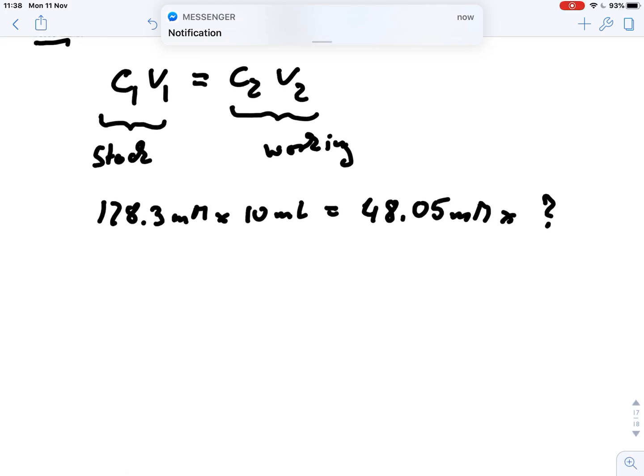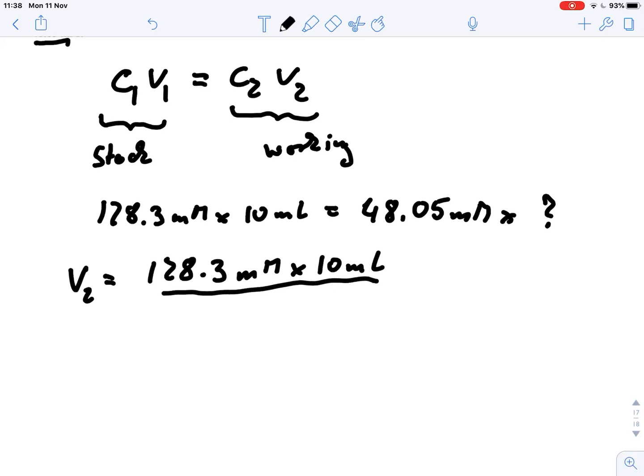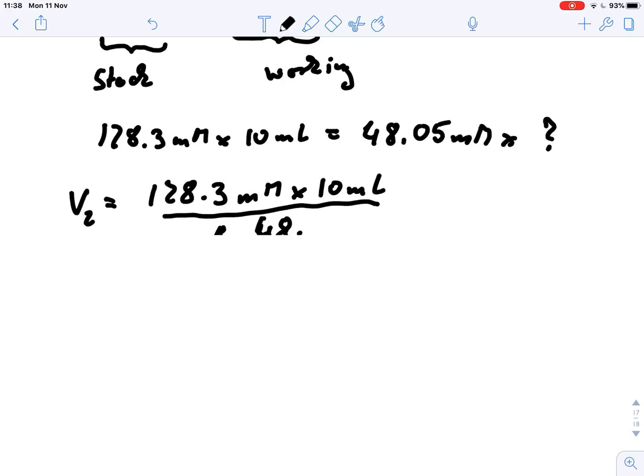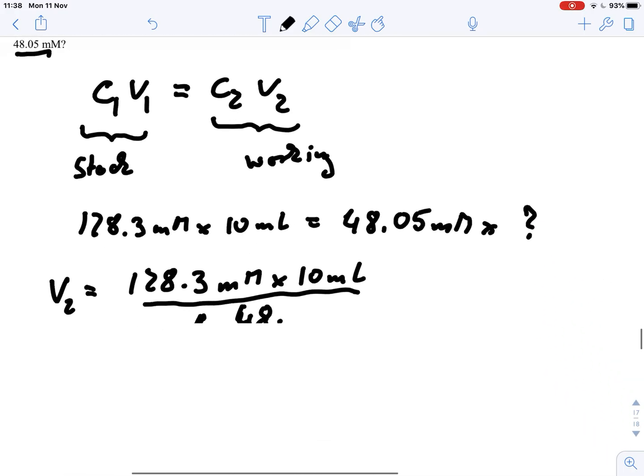So we just rearrange this equation and we get V2 equals 128.3 millimolar times 10 milliliter divided by 48.05 millimolar, and if we do that we get a total of 26.7 milliliter.